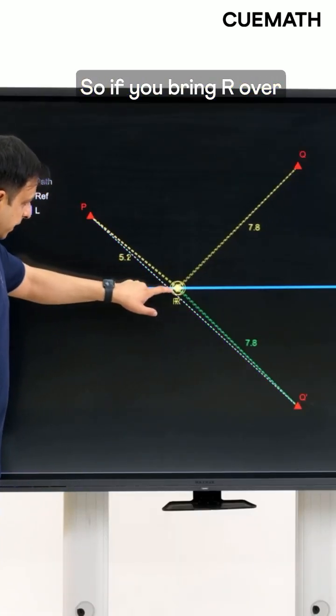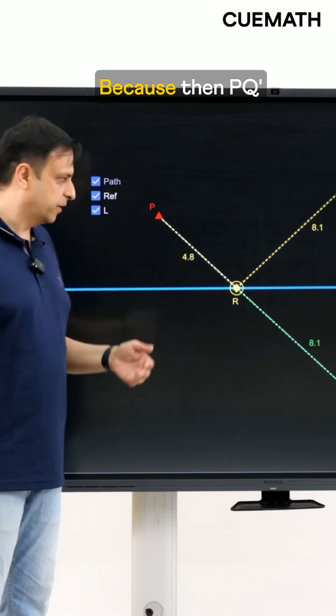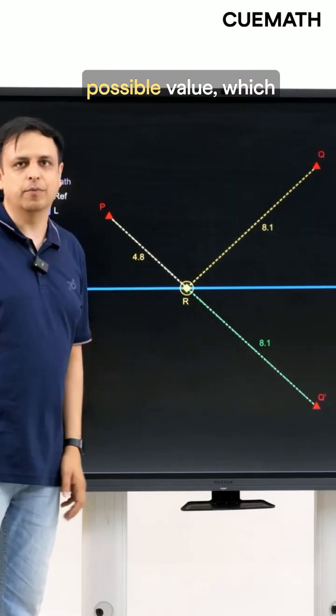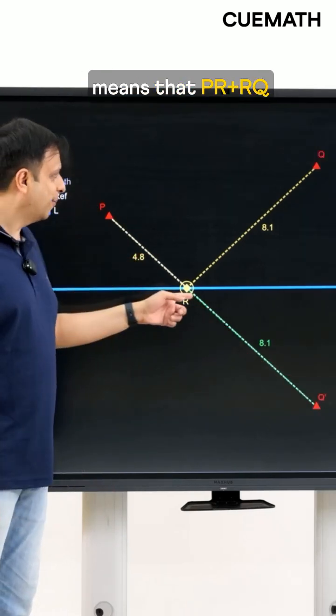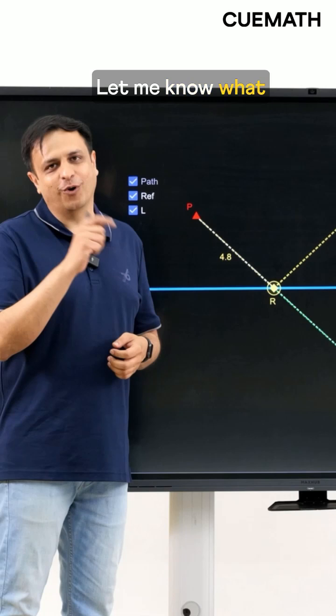So if you bring R over here such that this becomes a straight line we are done, because then PQ dash is the minimum possible value, which means that PR plus RQ is now minimum. Really elegant argument right? Let me know what you think.